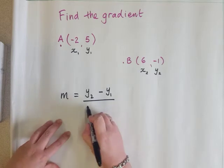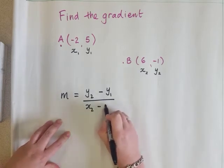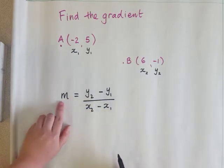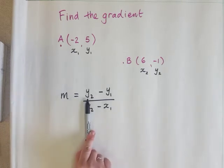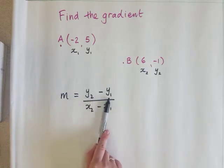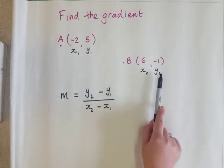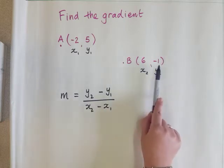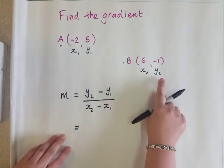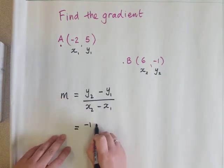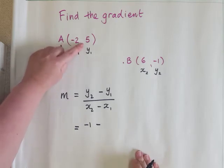So all divided by x₂ minus x₁. And we use the letter M for the gradient. Basically we're saying the second y-coordinate minus the first y-coordinate. So that's going to be this number here and this number here. We take them away. So negative 1 and I take away this number here, 5.